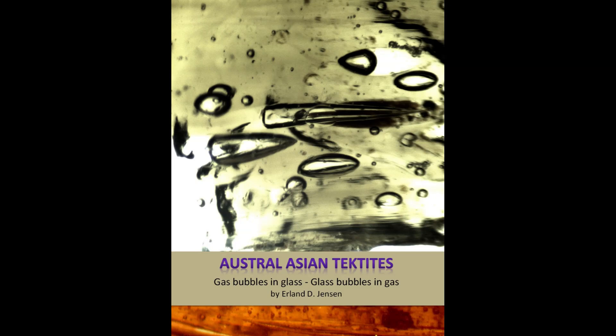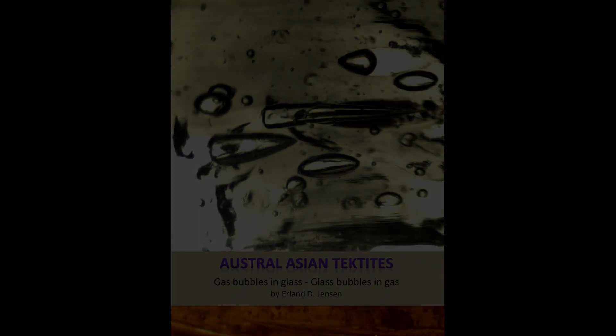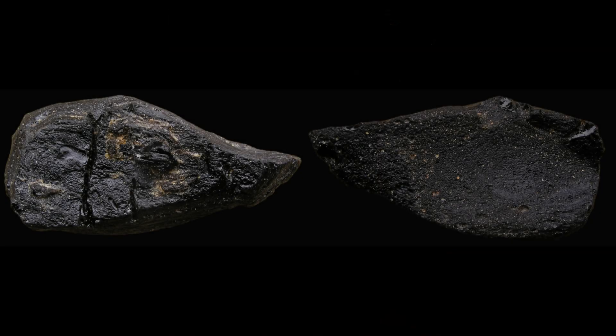This poster is about Muang Nong tektite top and bottom sides and their horizontal web-like vents. There are two methods to distinguish between up and downsides of Muang Nong tektites. The first method is the surface method.